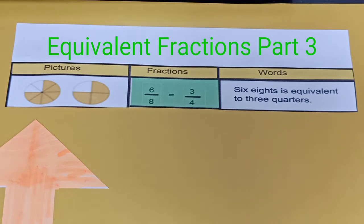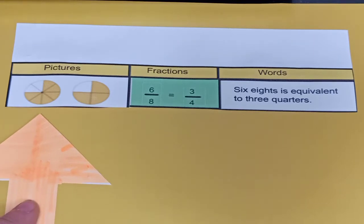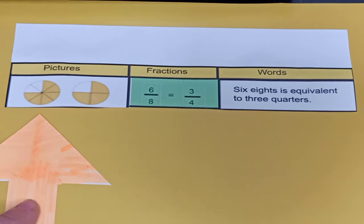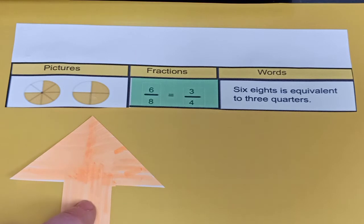We're going to start over here on the left side where you see the word pictures. There are two circles underneath. The first circle where the arrow is pointing, that shape is divided into 8 equal pieces, and the fraction is 6 over 8. This is equivalent to this circle here that is divided into 4 equal pieces, and the fraction is 3 over 4.